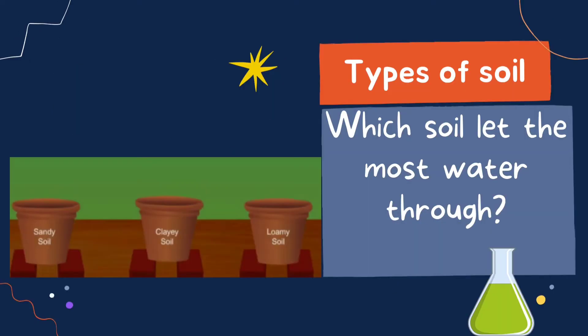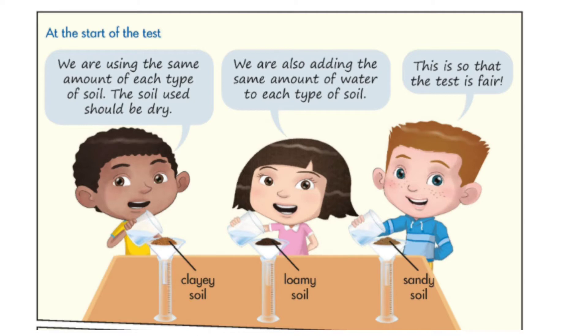To understand more, let us do this investigation of which type of soil lets the most water through. We can see in our book we have Raj, Lily, and Tom. Raj said: we are using the same amount of each type of soil.